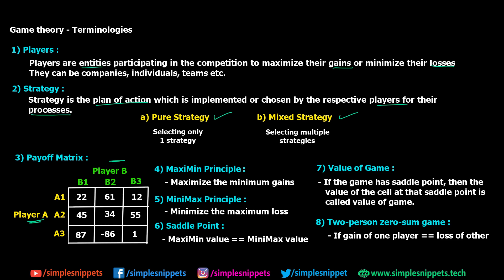When a cell has a positive value, player A gains that amount. For example, if player A selects A1 and player B selects B1, player A gains 22 rupees. If A selects A2 and B selects B2, player A gains 34 rupees and player B loses 34 rupees. If there is a negative value — say A selects A3 and B selects B2 — player A incurs a loss of 86 and player B gets a profit of 86. This is how you read the payoff matrix.